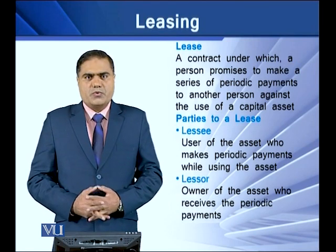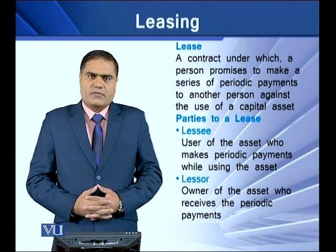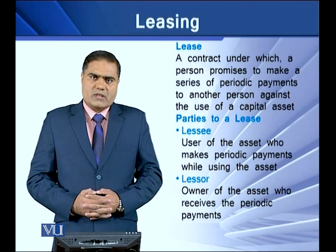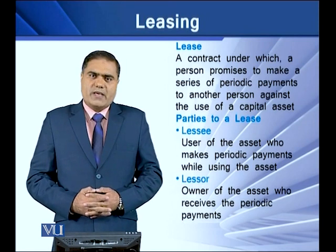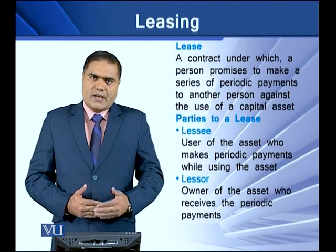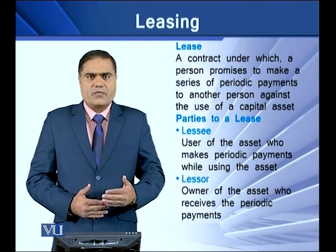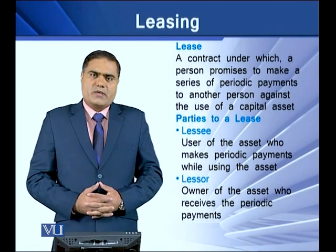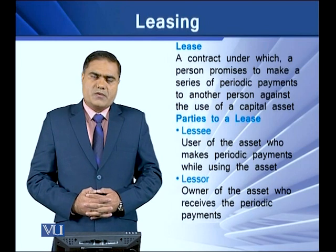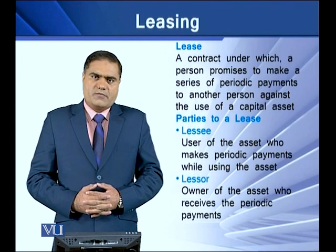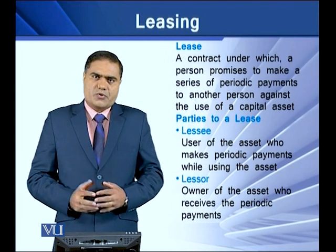In a lease contract there are two different types of persons. The first is the lessor — a person who owns an asset and gives the rights of using it to another person in exchange for a series of periodic payments. The second is the lessee — a person who agrees to make a series of periodic payments to the lessor in exchange for the rights to use the asset owned by the lessor.